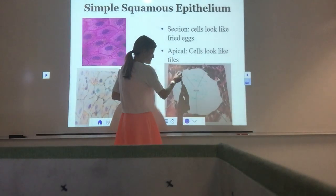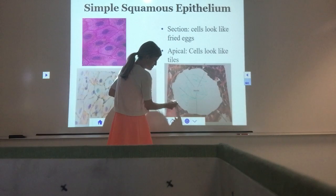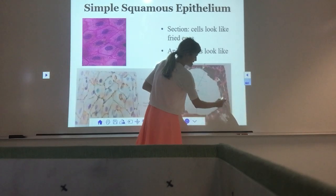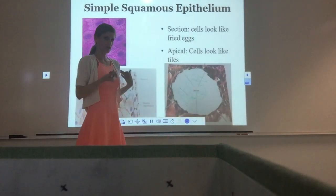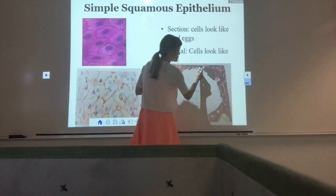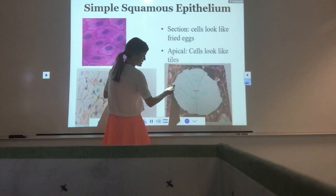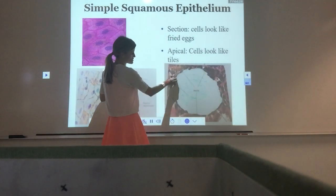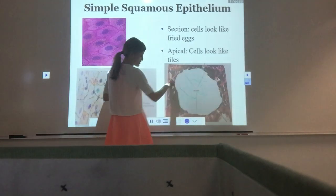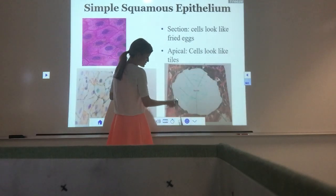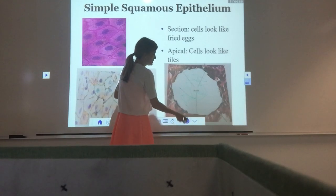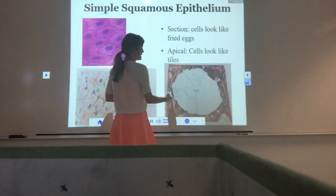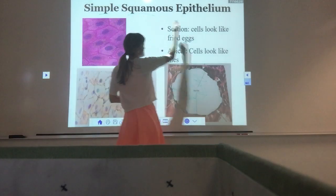When naming this epithelial tissue from the cross-section: first, how many layers? It's just one thin layer right there — the messy stuff underneath is connective tissue. So it's simple. And the cells are flat, not square, not tall columns — so it's squamous. Simple squamous epithelial tissue.